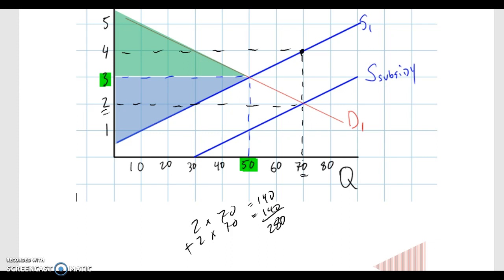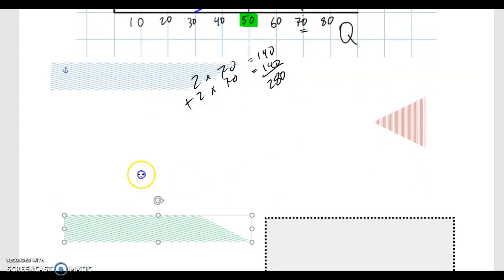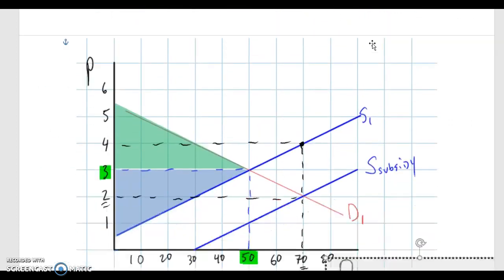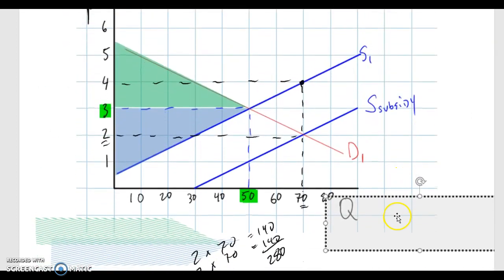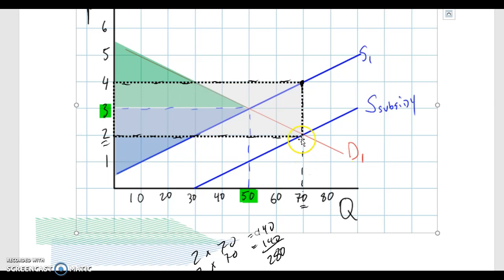So what we see here are a few things. First of all, let's look at this area. So this is the amount that the government's going to have to spend on implementing the subsidy. So the government's going to have to spend $2. Again, that's the vertical distance here, $2 to $4. So the government's going to have to spend $2 times 70, that is $140 to get the price down and a higher quantity in the market.